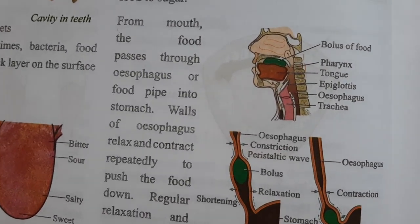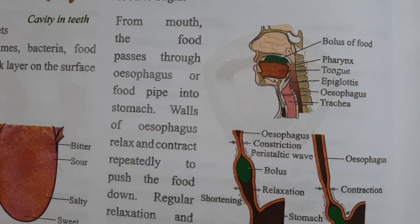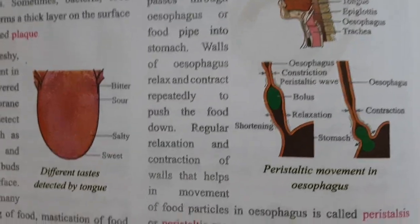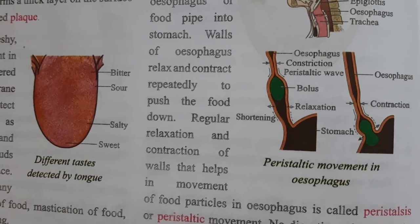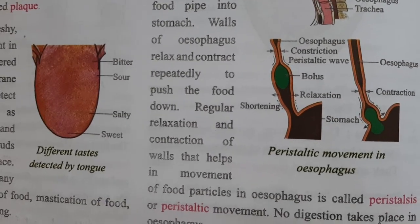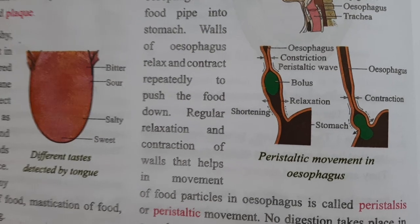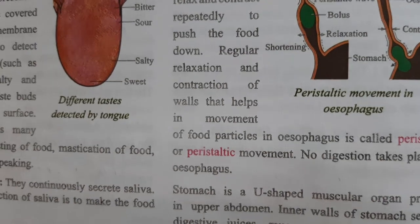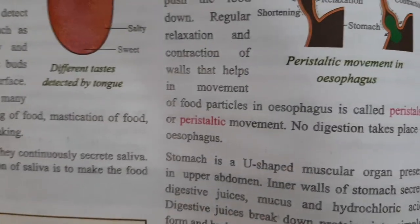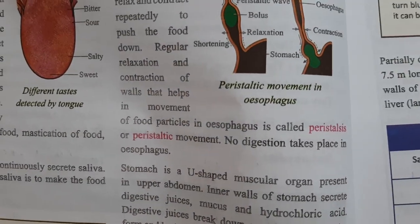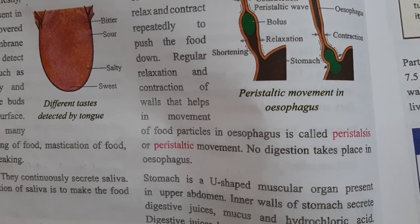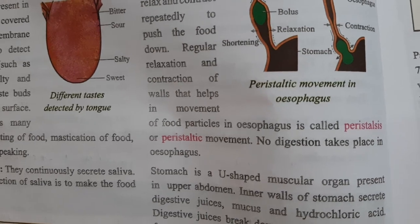From the mouth, food passes through the esophagus, also known as the food pipe, into the stomach. The walls of the esophagus relax and contract repeatedly. This regular relaxation and contraction of the walls, which helps in movement of food particles, is known as peristalsis or peristaltic movement. No digestion takes place in the esophagus.